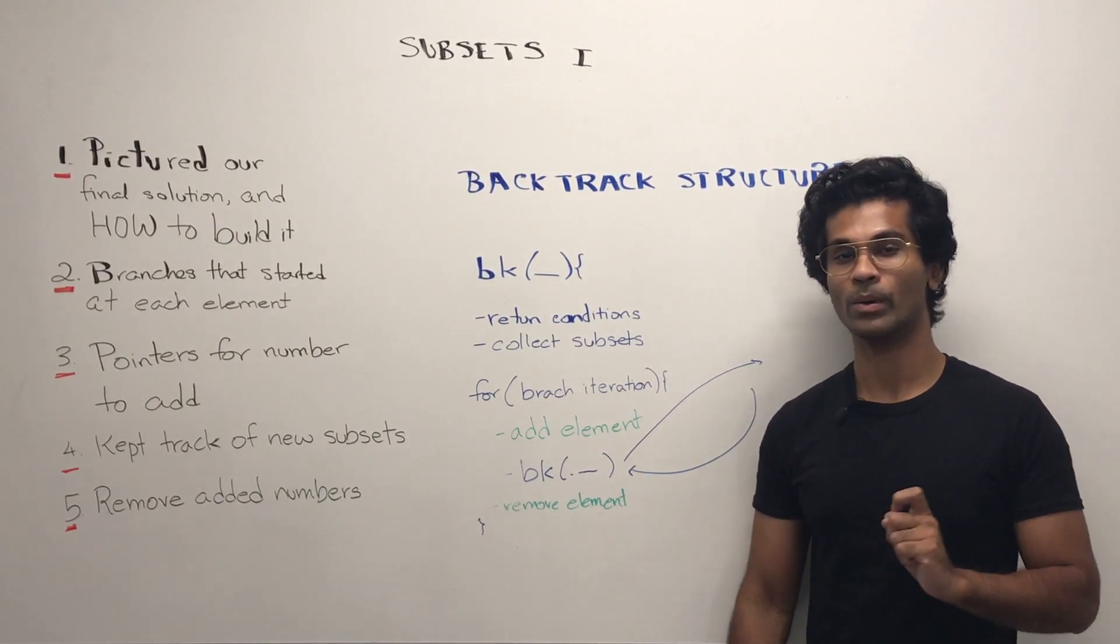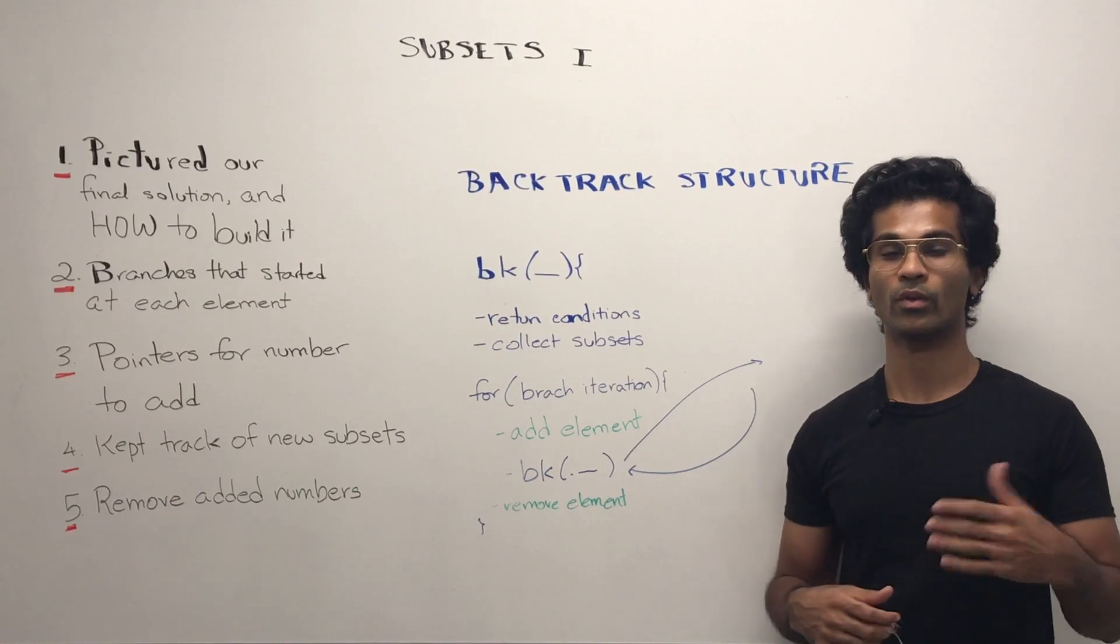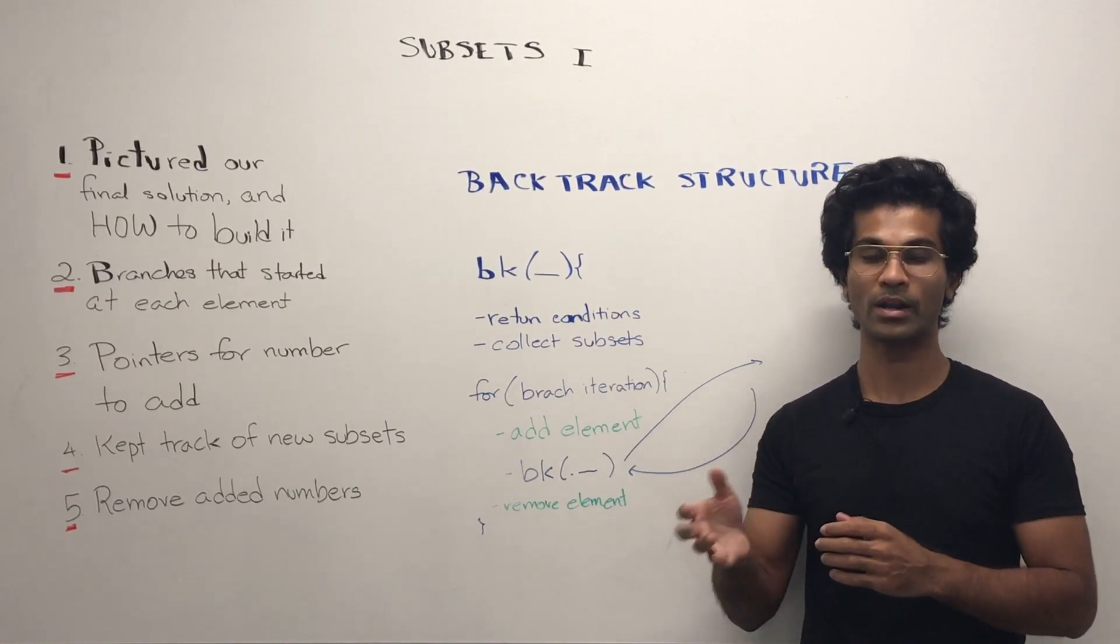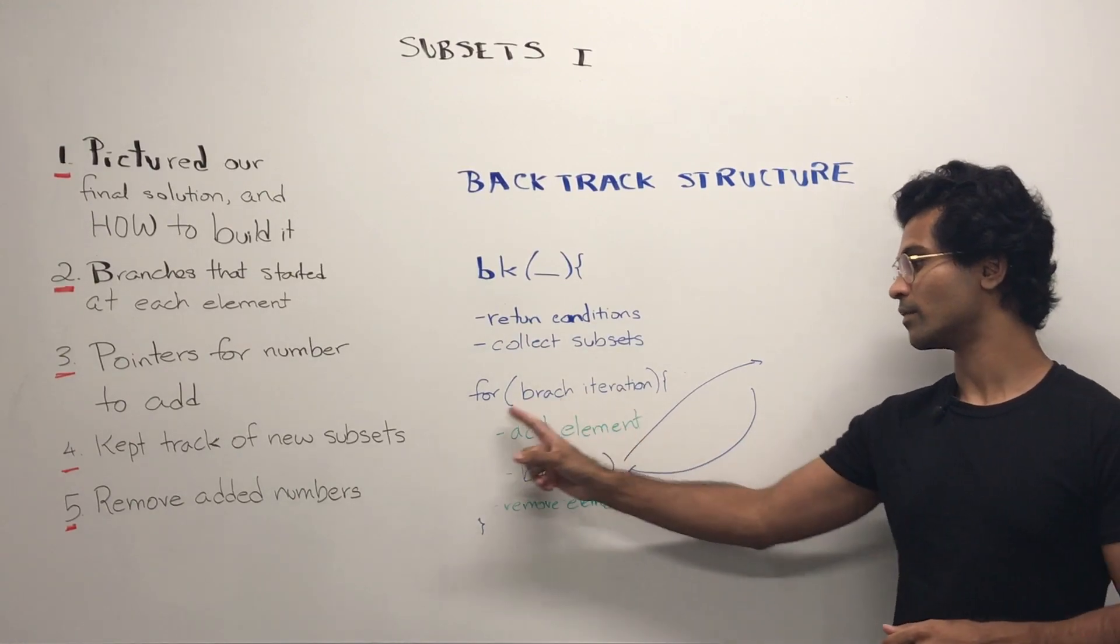Next, we begin our for loop which is going to be the branches. So if you recall, the branch that started from one, started from two, started from three, is going to be because of this for loop iteration.